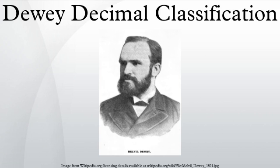According to a study done in 1927, the Dewey system was used in the U.S. in approximately 96% of responding public libraries and 89% of the college libraries. After the death of Melville Dewey in 1931, administration of the classification was under the Decimal Classification Committee of the Lake Placid Club Education Foundation, and the editorial body was the Decimal Classification Editorial Policy Committee with participation of the American Library Association, Library of Congress, and Forest Press. By the 14th edition in 1942, the Dewey Decimal Classification Index was over 1,900 pages in length and was published in two volumes.